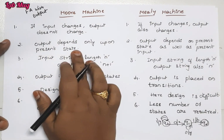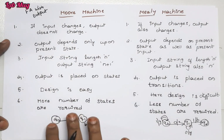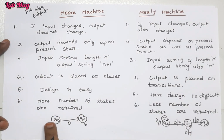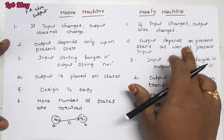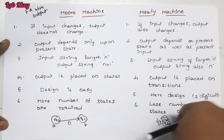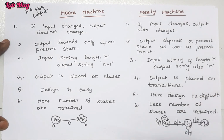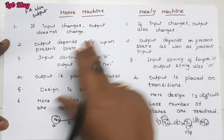Next difference: in Moore machine, output depends only upon the present state. So whatever state you travel to, the output depends only on that state. But in Mealy machine, output depends on both the present state and the input. So two values determine the output in Mealy machine.